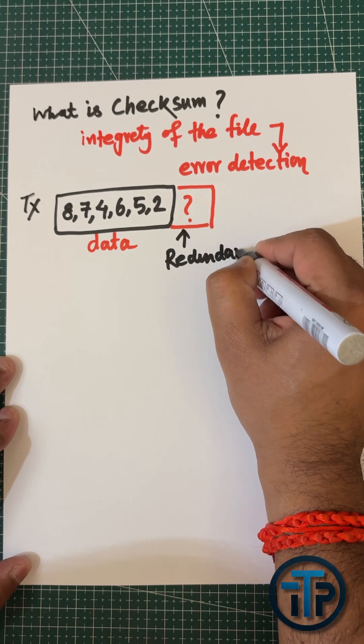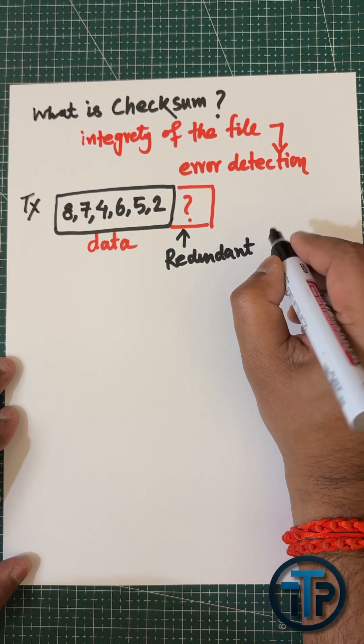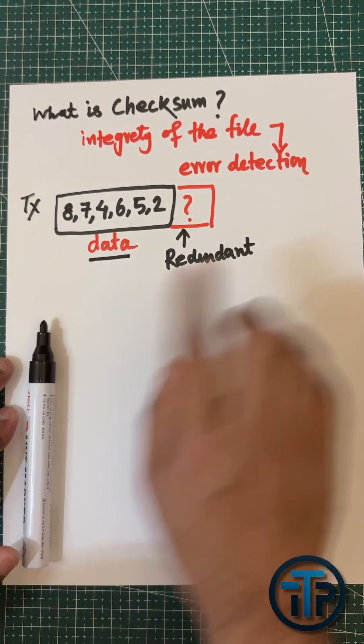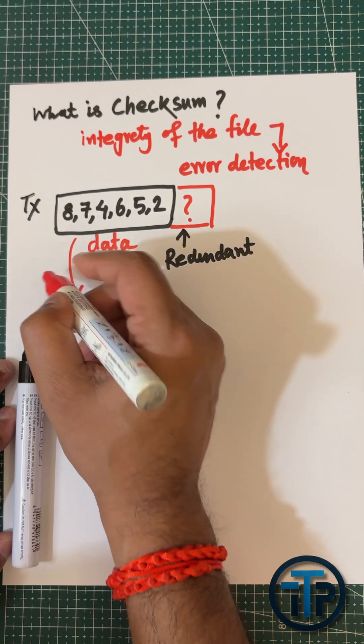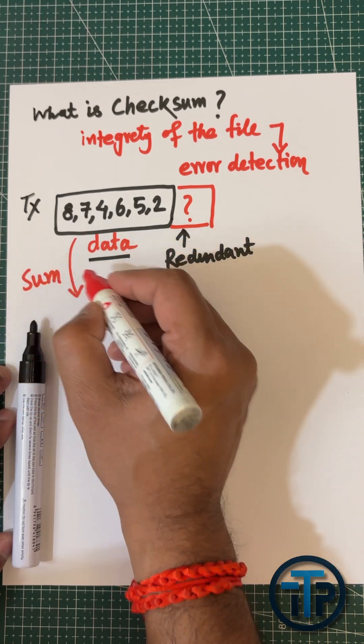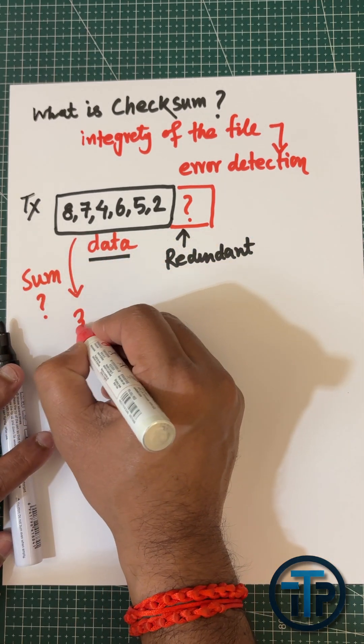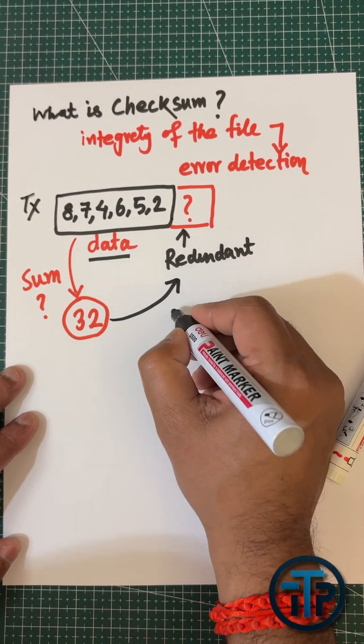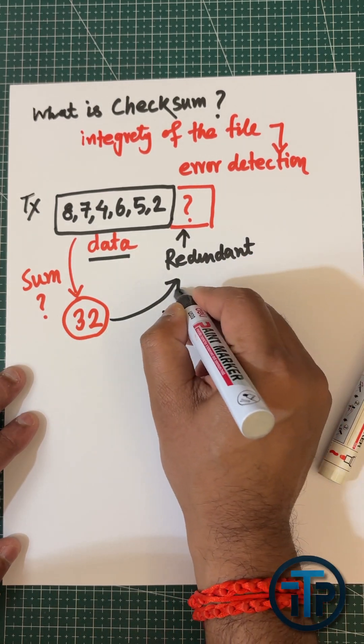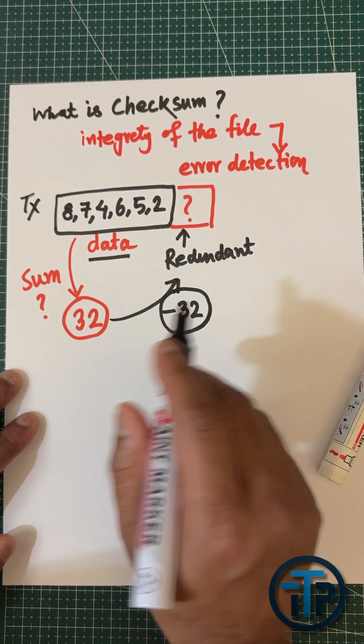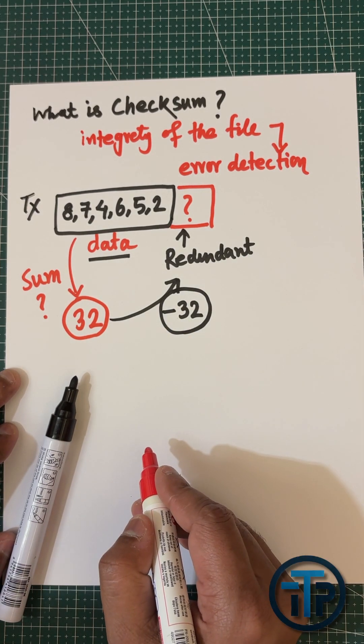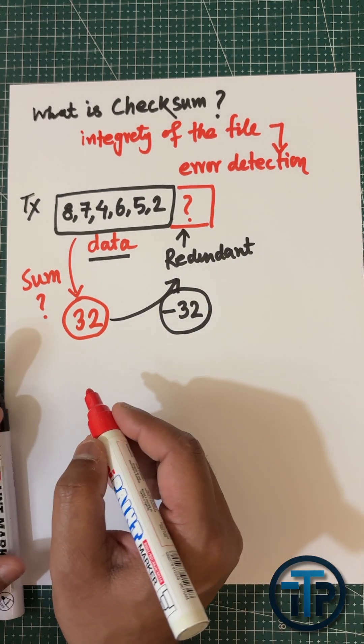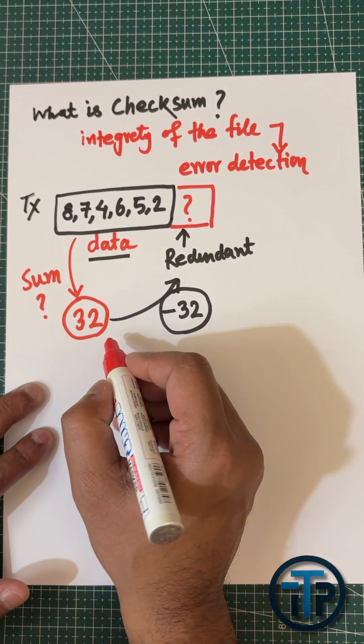We have to find out what is the redundant data or redundant bit - that is our main goal. Now, what is the sum of this raw data? The sum is basically 32. In the checksum, instead of sending 32, we are sending minus 32 so that in the receiver side the entire sum will be zero.